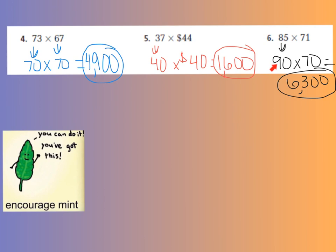And for number 6, 85 rounds to 90, 71 rounds to 70, and 9 times 7, that gives me 63, plus my two zeros, which makes 6,300. I hope that you guys got those all right. I know you did. Give yourselves a happy face.